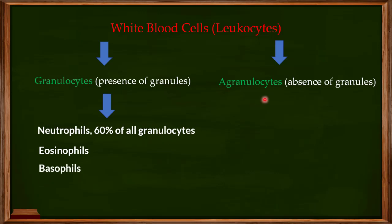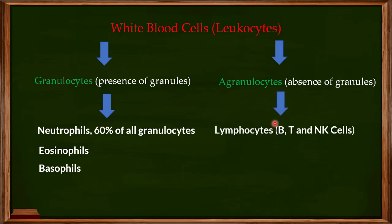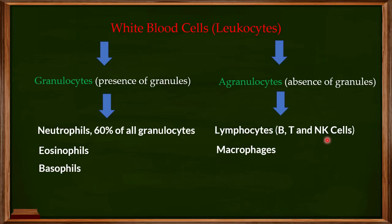When you talk about agranulocytes, the important types are the lymphocytes, which include the B cells, T cells, and natural killer cells. The macrophages are another important type of agranulocyte, and the third type is known as monocytes.